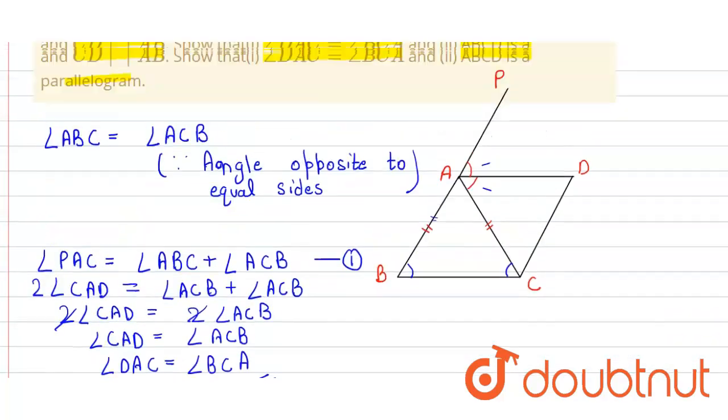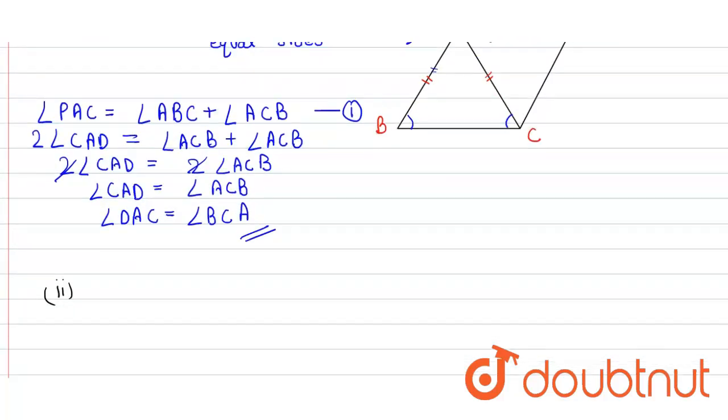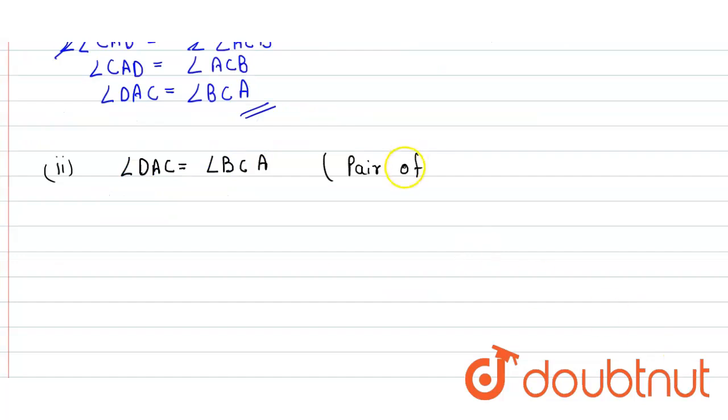In the second part of the question we have to prove that ABCD is a parallelogram. So from the above conclusion angle DAC is equal to angle BCA. They are a pair of alternate angles.